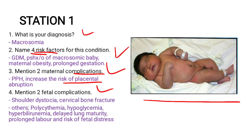For fetal complications, you can have shoulder dystocia, cervical bone fracture, polycythemia, hypoglycemia, hyperbilirubinemia, delayed lung maturity, prolonged labor, and the risk of fetal distress.